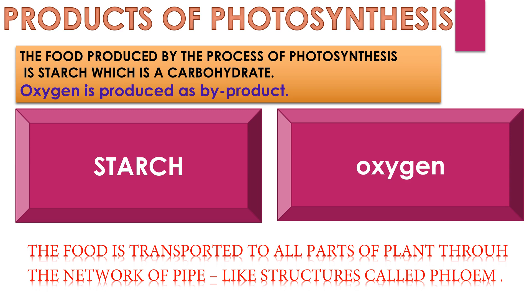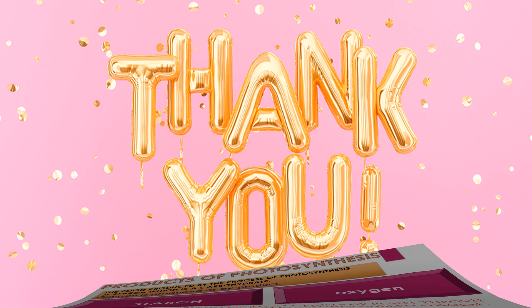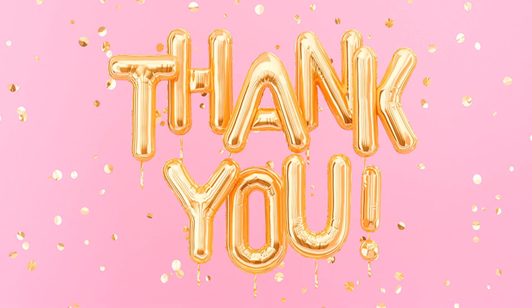The food produced by the process of photosynthesis is starch, which is a carbohydrate. Oxygen is produced as a by-product. The food is transported to all parts of the plant through a network of pipe-like structures called phloem. Thank you — if you find this video helpful, like, share, and subscribe to our channel.